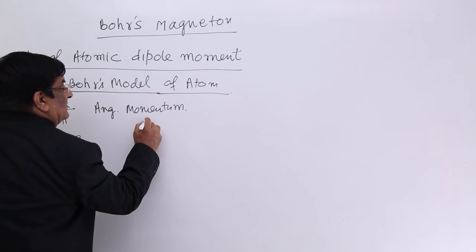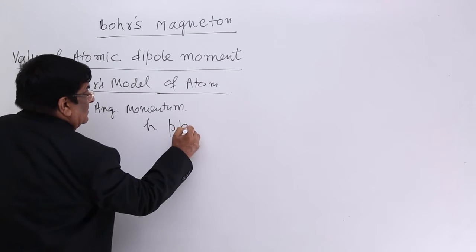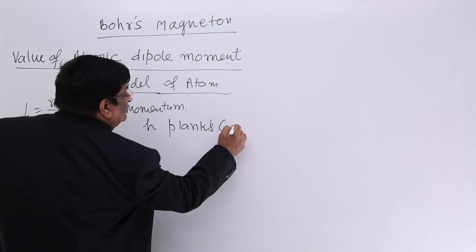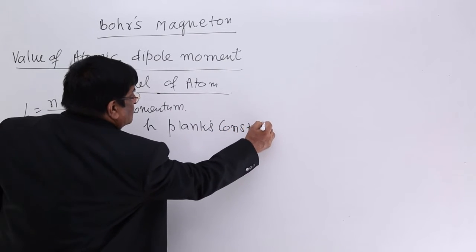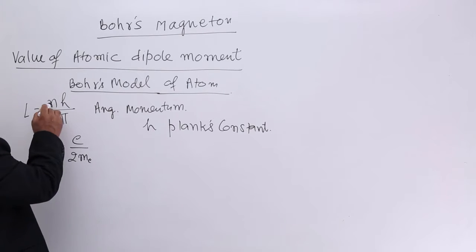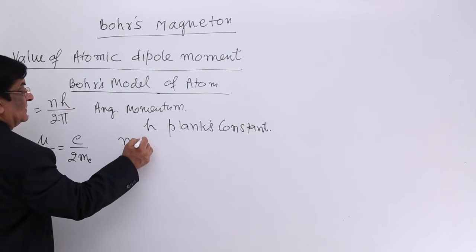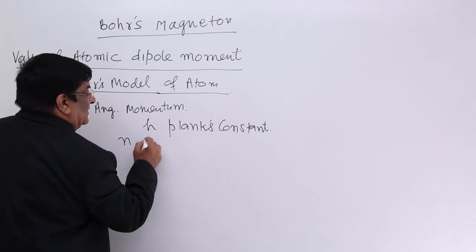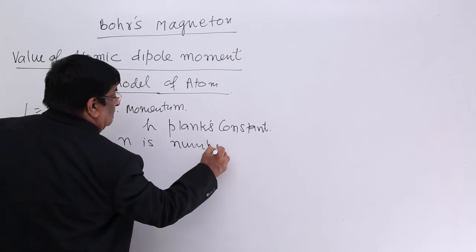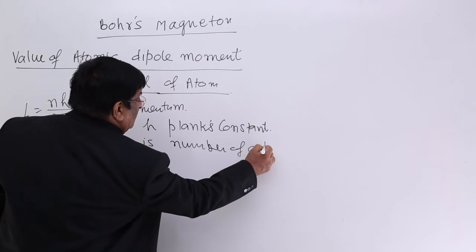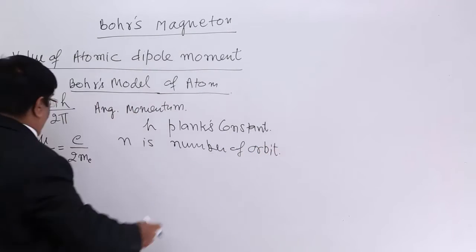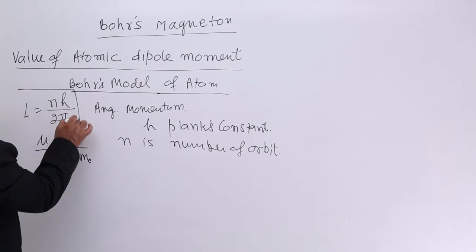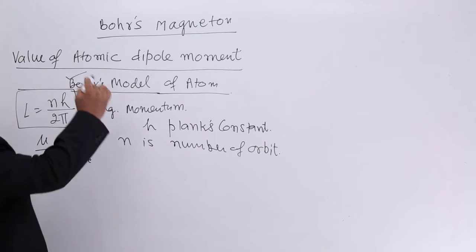H is Planck's constant — Max Planck's constant. N is the number of the orbit, whether it is the first orbit, second orbit, or third orbit. This is the hypothesis for angular momentum given by Bohr's hypothesis.